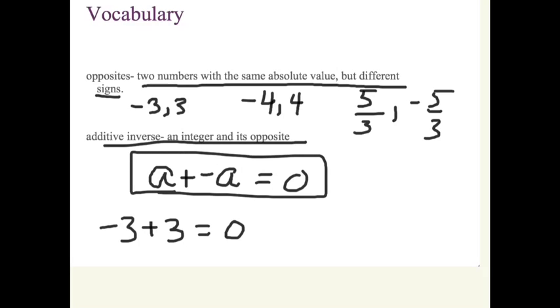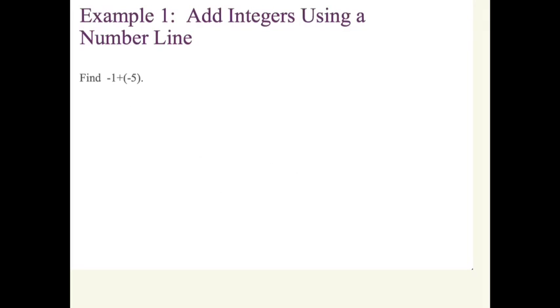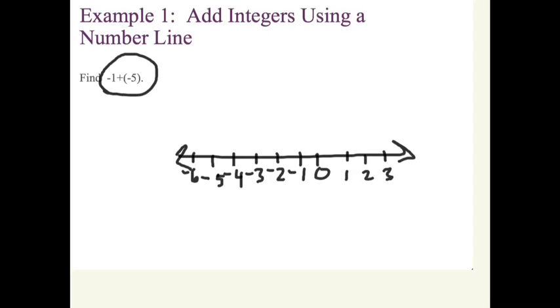Your text has us looking at examples that require us to use a number line to add such things together. We're not going to do that typically, but I'll quickly jot down a number line here so that we can actually kind of figure out how to do this if we need to. I hope that you guys know at this point that the answer to this is negative 6. But let's see how we can use the number line to do so.